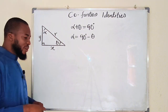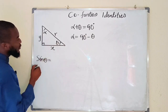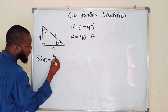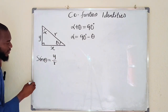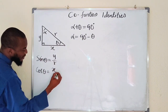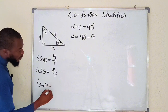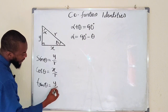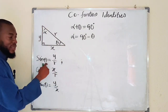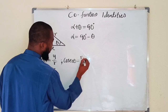Let me write down the six trigonometric ratios. Sine of theta equals opposite divided by hypotenuse, that is y divided by r. Cosine of theta equals adjacent divided by hypotenuse, that is x divided by r. Tangent of theta equals opposite divided by adjacent, that is y divided by x. The reciprocal of sine is cosecant, so cosecant of theta equals r divided by y.